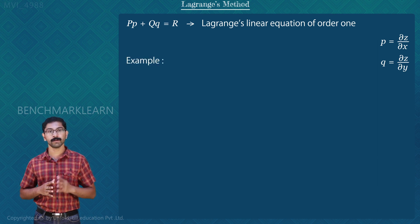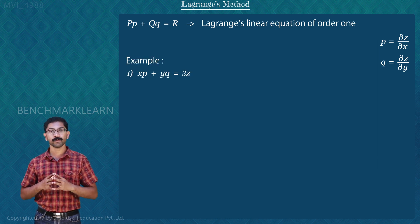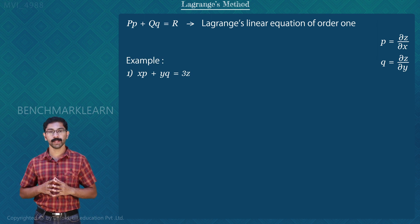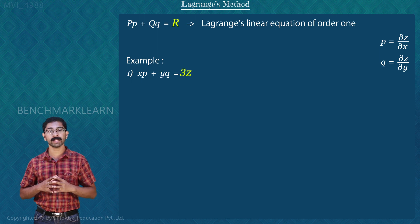Examples of such PDEs are: 1) xp + yq = 3z. Here, P is x, Q is y, and R is 3z.